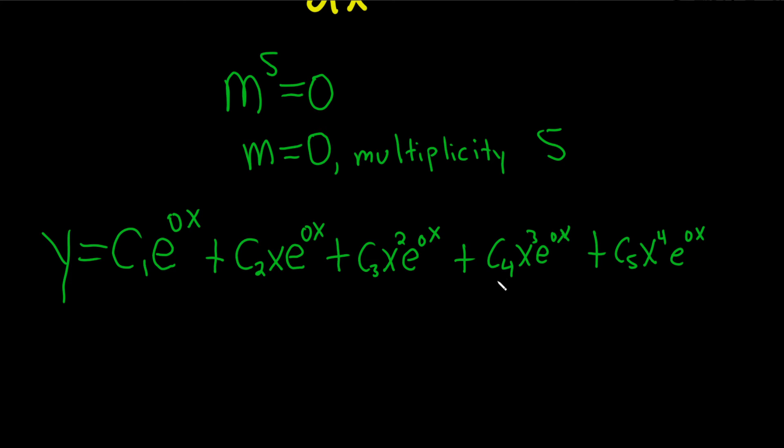Okay, so what happens now, all the e to the zeroes are one, so you just get c1 plus c2 x plus c3 x squared plus c4 x cubed plus c5 x to the fourth.